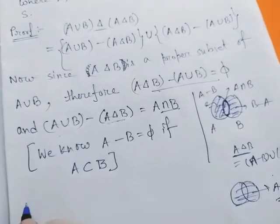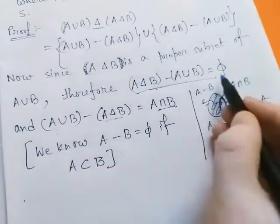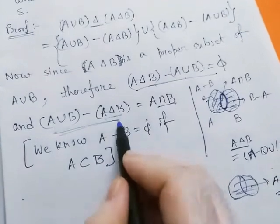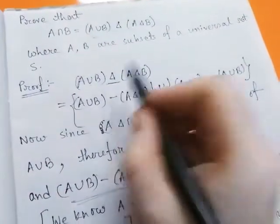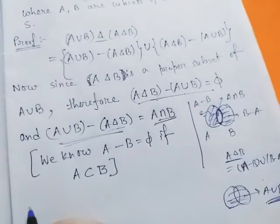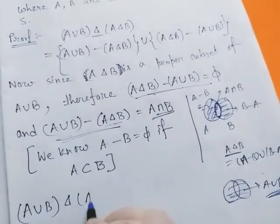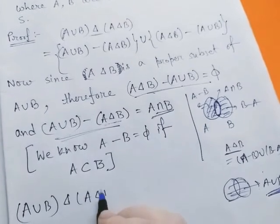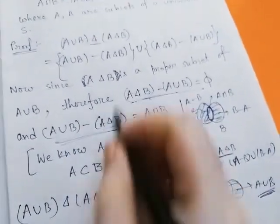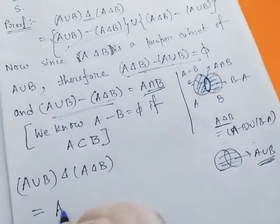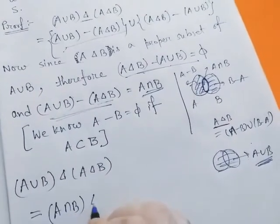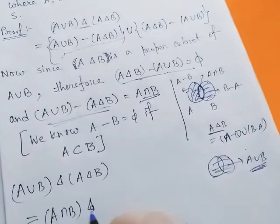So we find that this is equal to phi and this equals A intersection B. So we have A union B delta A delta B equal to this is A intersection B.